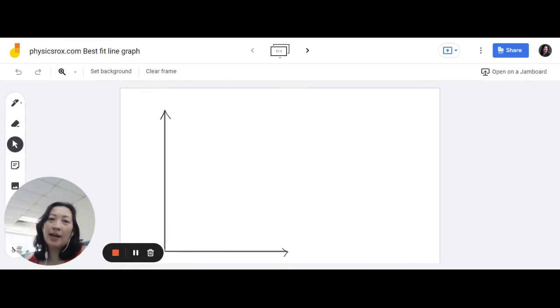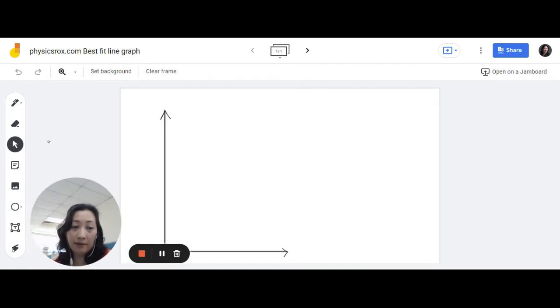So for those of you who don't know me, I'm Ms Ho, your physics teacher. All right, so what I'm going to go through in this video is a general overview of how to draw a best fit line graph. This is especially for experiments and I'm going to be using the pendulum experiment mainly as the reference.